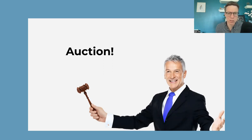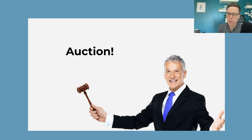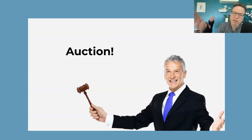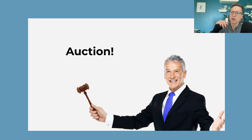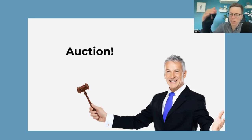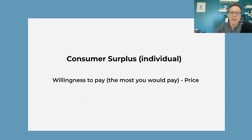The way I always introduce consumer surplus is with an auction. I bring some items and auction them off — usually MRU stickers. Going once, going twice, the whole thing. Except instead of collecting money, I give the student the sticker and then ask: how much better off are you now that I've given you the sticker? Because they've essentially revealed their willingness to pay — that was the most they would pay for the sticker, and I've made them that much better off.